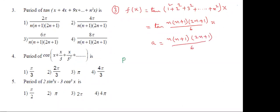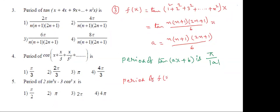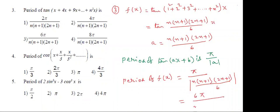Now, the period of tan(Ax + B) is π by mod A. The function is in the form of tan(Ax), and A equals n(n+1)(2n+1) by 6. Substituting, the 6 goes to the numerator, so the period of F(x) is 6π by n(n+1)(2n+1). This is the answer for the third question.